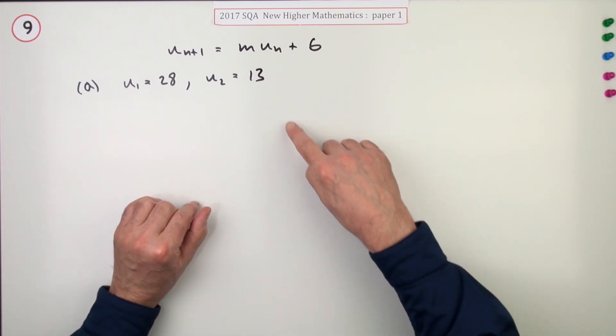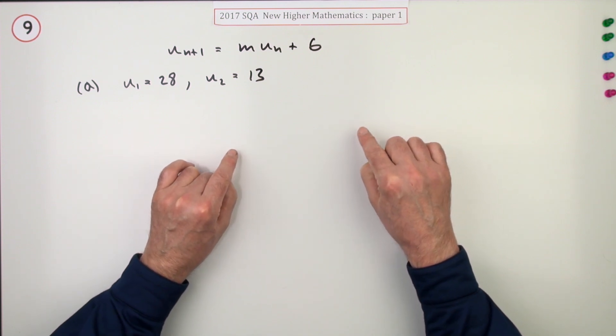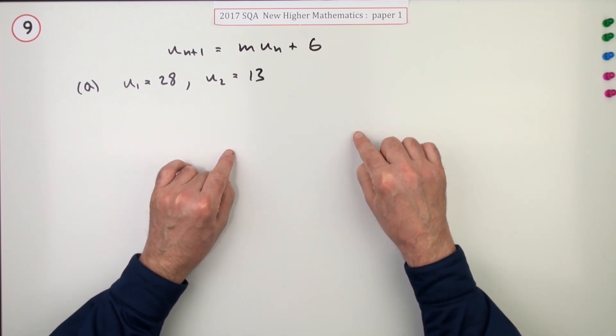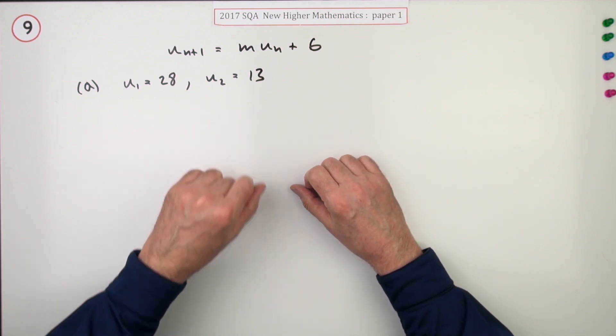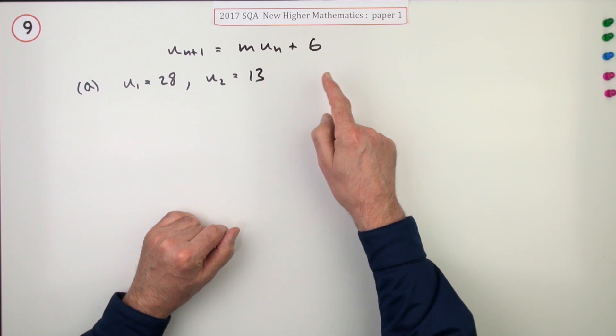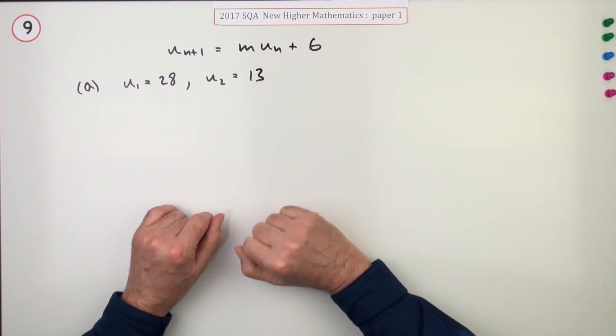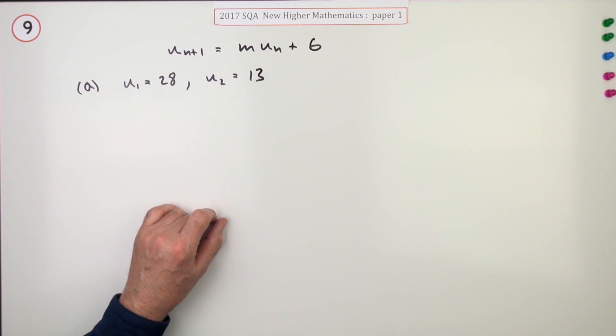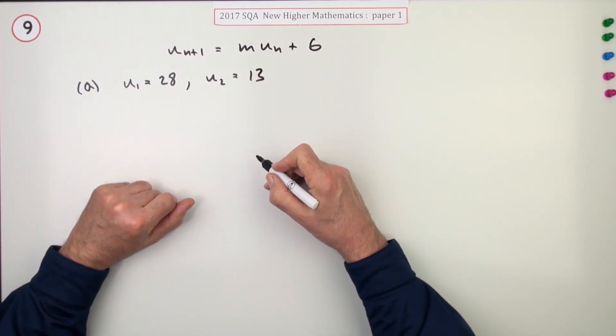One of the guiding principles in the marking is an answer on its own with no working cannot get full marks unless otherwise stated in the marking scheme, and certainly that applies here. You could quite easily do that in your head, but if you just write down the answer m equals whatever, you'd only get one of the two marks. They want you to explicitly put those in, which is what you should do first anyway.